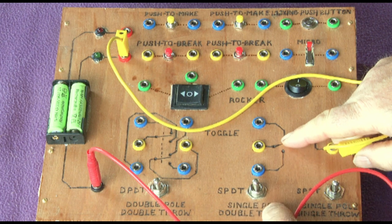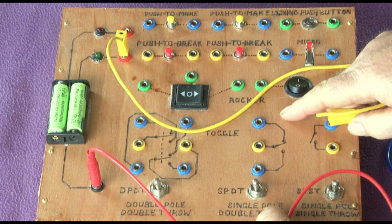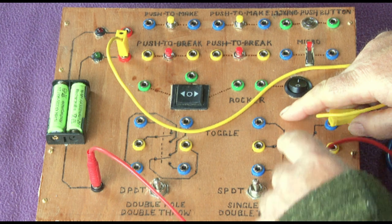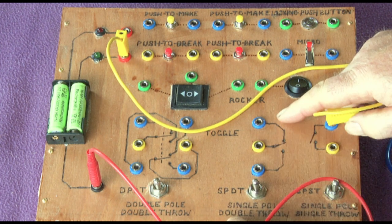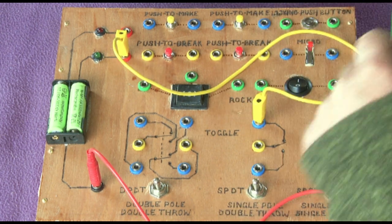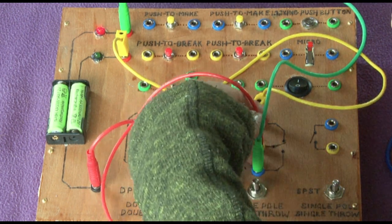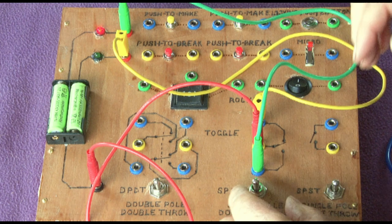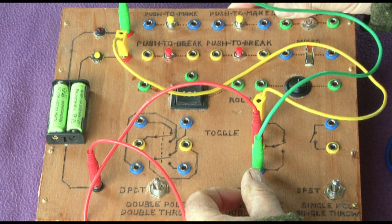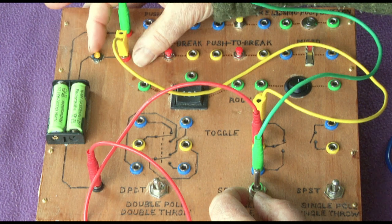This one here—single pole double throw. The pole means single switch; double throw, the throw is the number of options. So I've got a single switch (single pole), two options (two being double throw). So if I connect it up like that, then we've got when the switch is down, we've got this green lead leading to the red light, and I switch it up, it's switching across to this yellow one and the light here.